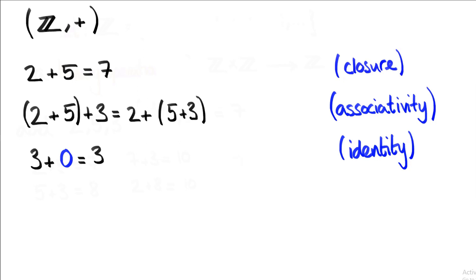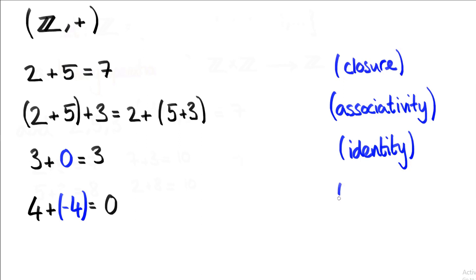Finally, for every element in the set, we need to have an inverse element. That means that if I add an element and its inverse together, the result is going to be the identity element. In our group the identity element is 0, so for example we need to find something that, when added to 4, gives back 0. That's quite easy — if we add minus 4 to 4, we get back 0. And it's the same for every element: minus 5 plus 5 equals 0, minus 6 plus 6 equals 0. So every element in our set has an inverse, and this is the fourth property that we need.